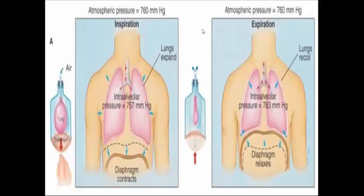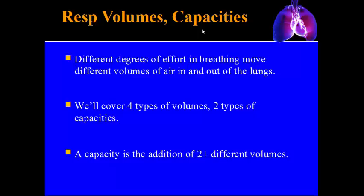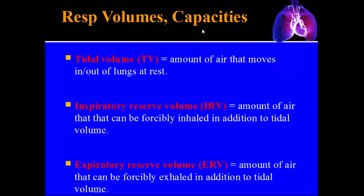Air always moves from an area of higher pressure to lower pressure — that's how air moves into and out of your lungs. Next we'll talk about respiratory volumes and capacities. Different degrees of breathing effort move different amounts of air. There are four volumes and two capacities; a capacity is just two or more volumes combined. The first is tidal volume (TV) — the amount of air moving in and out at rest, like the tide at a beach.